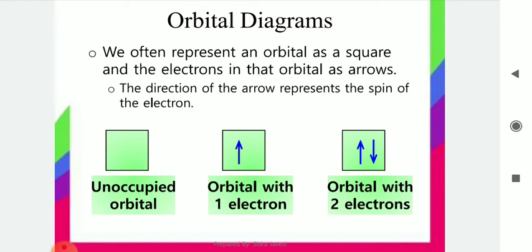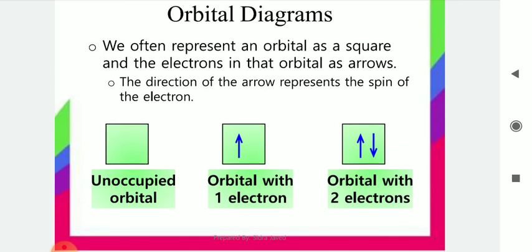For the orbital diagrams, we represent an orbital as a square and the electrons as arrows — the direction of the arrow represents the spin of the electron. The first block shows an unoccupied orbital. The second block shows one upward arrow, meaning an orbital with one electron. The third block shows two electrons paired up. In our next part, we will go into detail about filling electrons in a particular atom. Thank you very much.